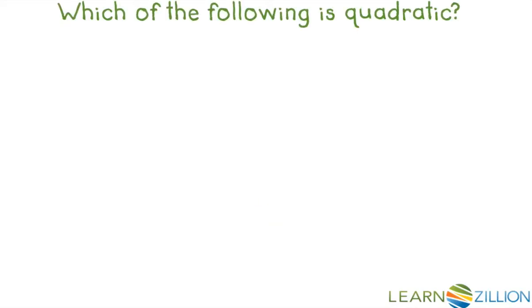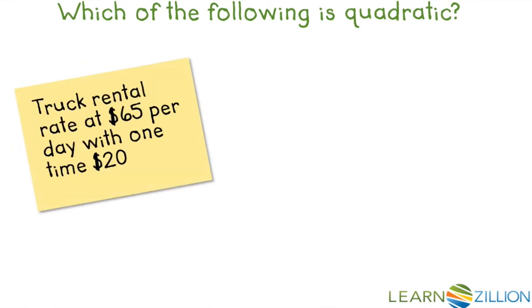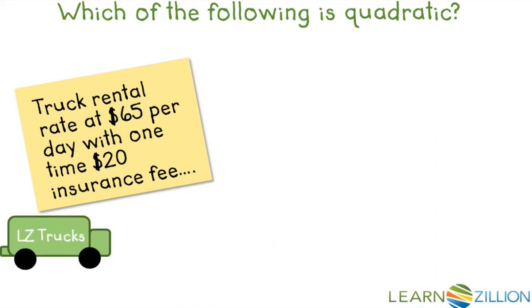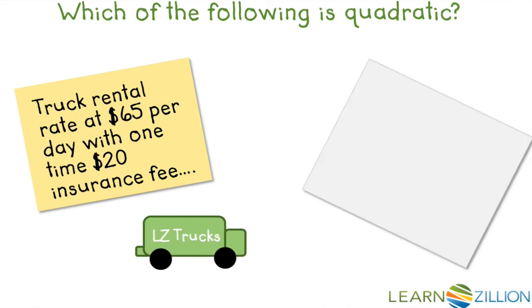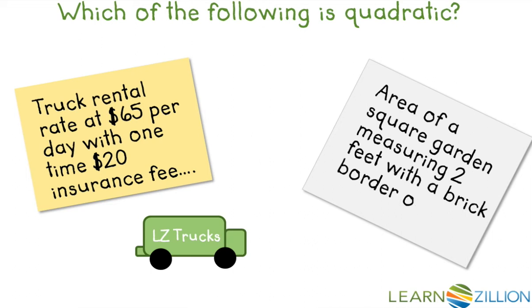Which of the following is quadratic? A truck rental rate at $65 per day with a one-time $20 insurance fee, or the area of a square garden measuring 2 feet with a brick border of the width of x feet?